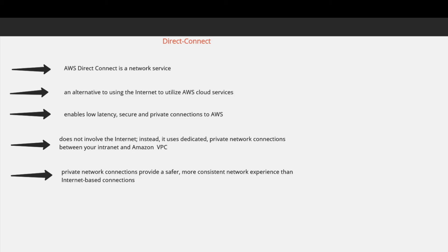Now let's talk about another service called Direct Connect. In the previous example, we connected the corporate data center to the AWS VPC using encrypted SSL VPN, but that VPN traffic still passes through the internet. What if you don't want your traffic to pass through the internet? Direct Connect is the solution. It's a network service and an alternative to using the internet to utilize AWS cloud services. It enables low-latency, secure, and private connections to AWS using dedicated private network connections between your intranet and Amazon VPC.